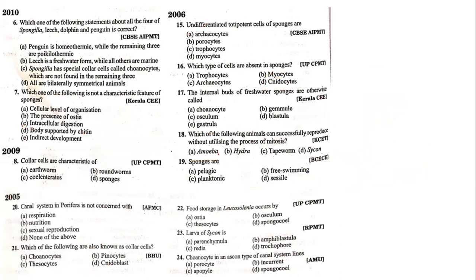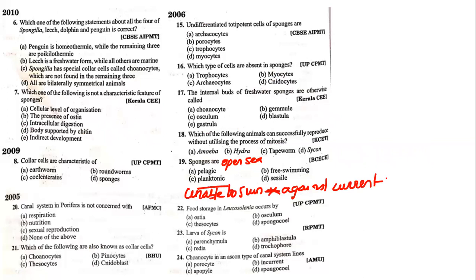Sponges are — pelagic, free swimming, planktonic, or sessile? Pelagic means present in open sea — somewhat applicable but not the answer. Planktonic means unable to swim against the water current — but sponges deal with water current using choanocyte cells. Free swimming — no, sponges are attached to substratum. Sessile means attached and unable to move from one place to another. So option B — sessile — is the right answer.